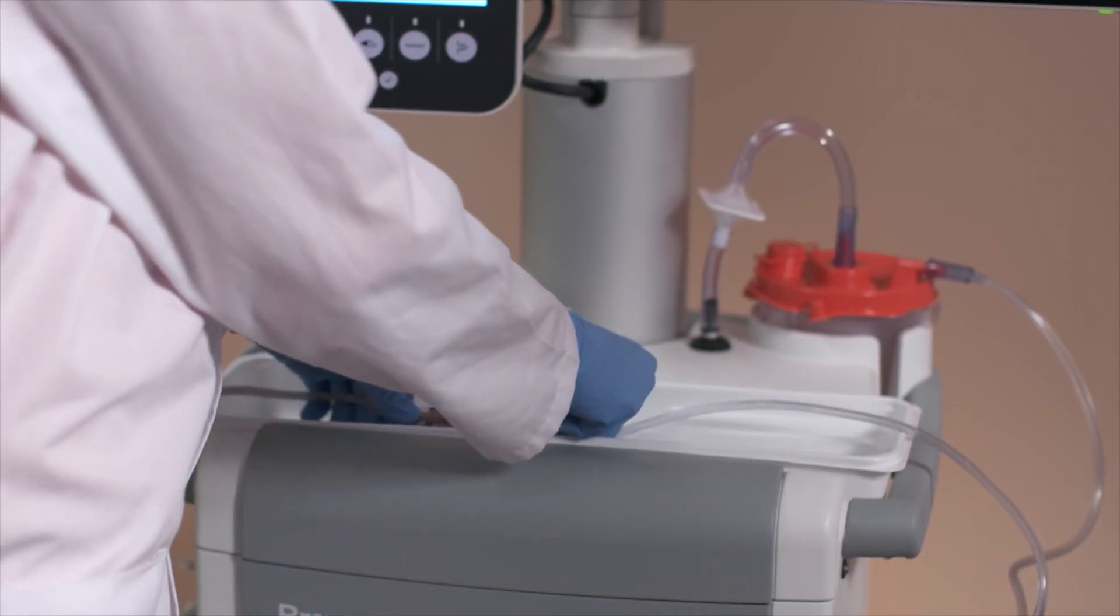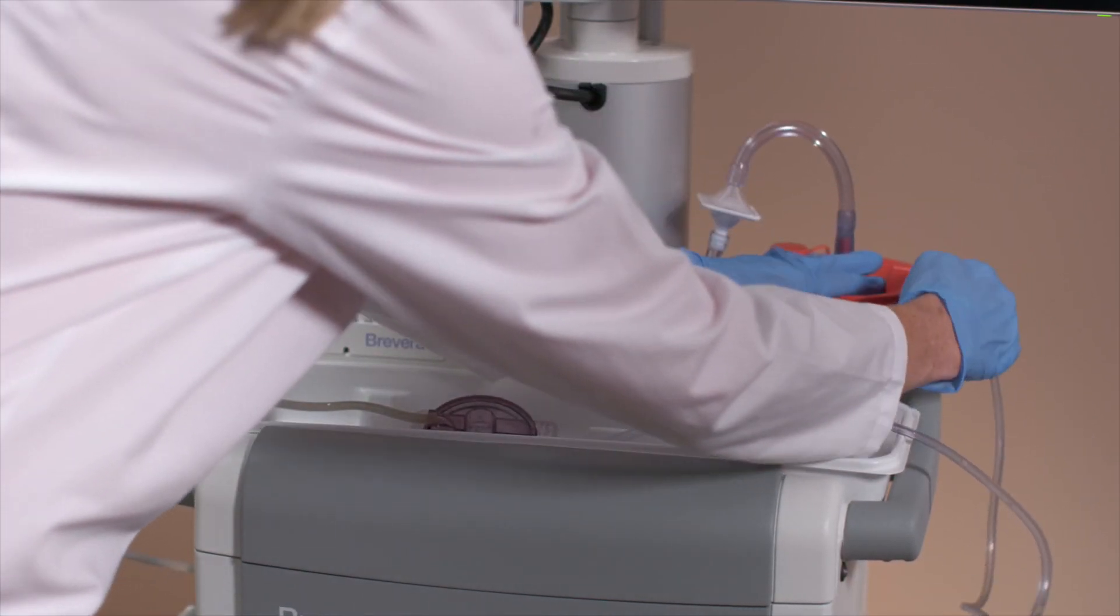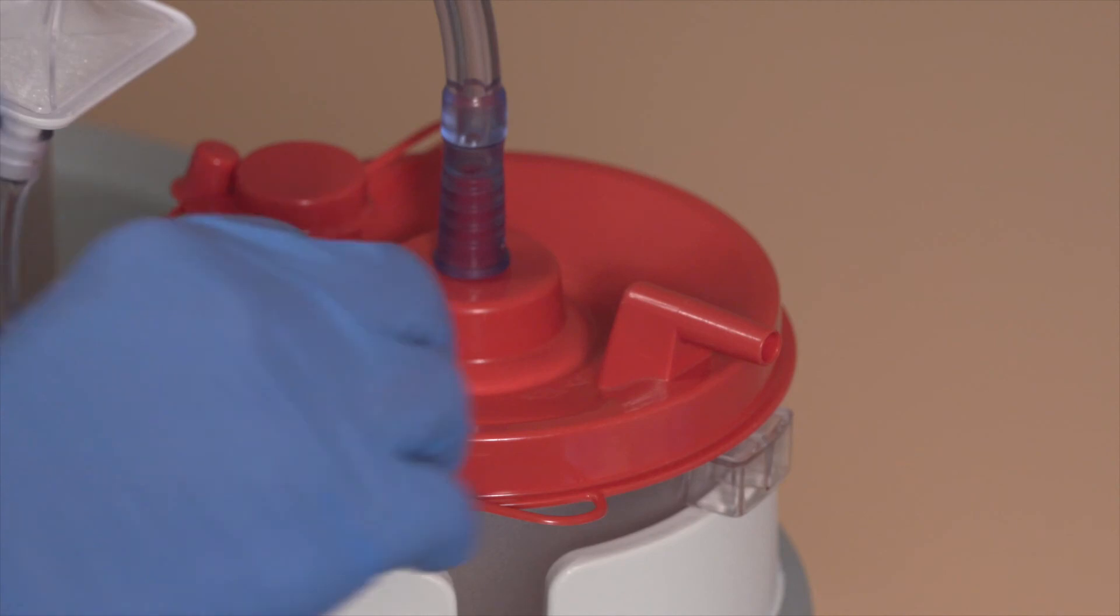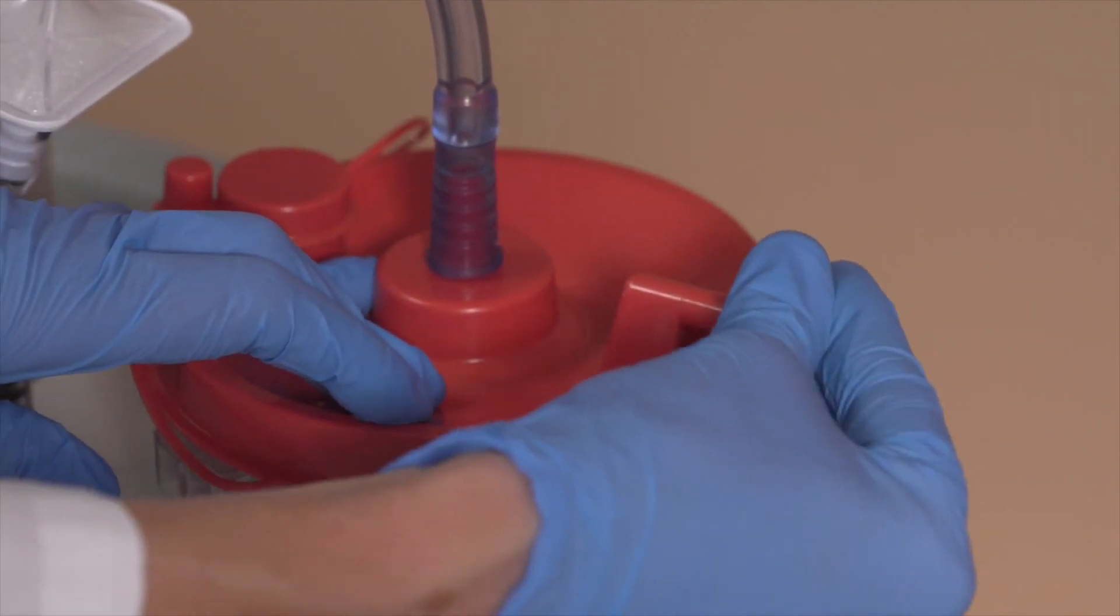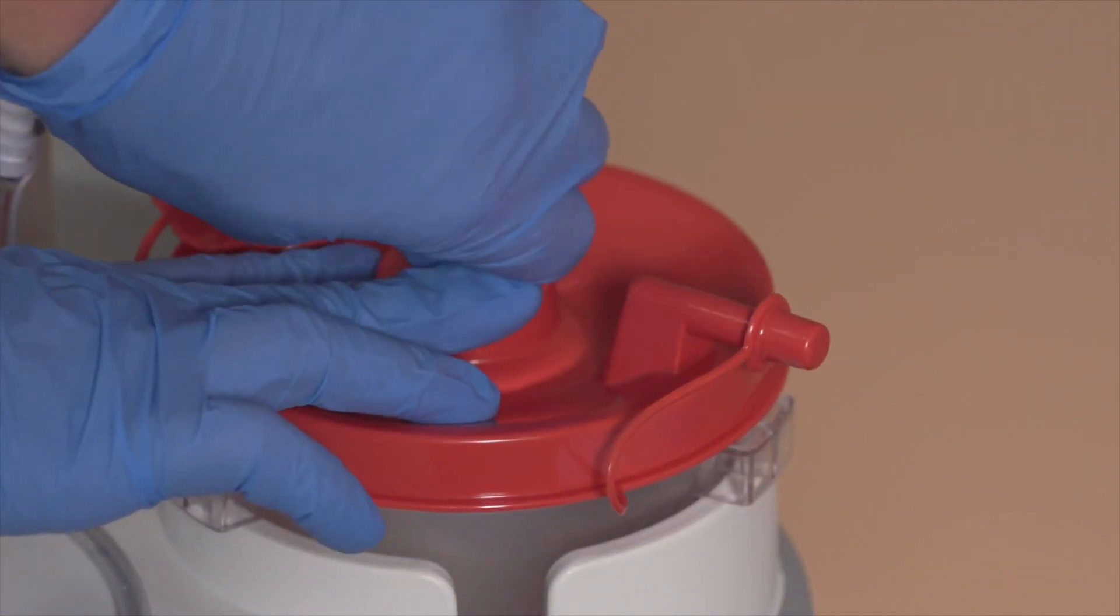The technologist will remove the vacuum tubing from the canister lid and disconnect the vacuum line assembly from the canister lid, making sure to seal all ports.